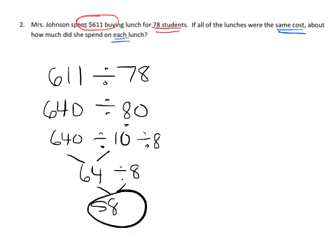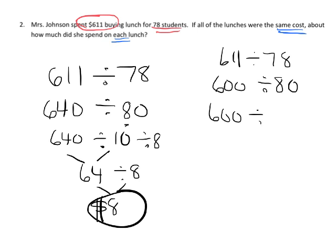So about $8 per lunch. That's one way to do it. Now another way we could have done it is we could have said, well, let's see. Let's start with that 611 divided by 78. We could have done 611 down to 600, and then divide. Then let's change 78 to, oh, let's do 80. Okay, so we could do 600 divided by 10 divided by 8.